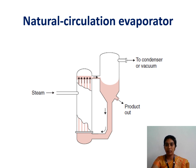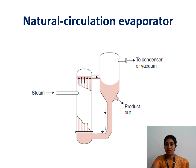Next is the natural circulation evaporator. Here, food material is passed inside these tubes and over the tubes, steam will be passed. Heat transfer takes place between the food inside the tubes and the steam outside the tubes. The product is collected in the calandria section, and if needed, it can be circulated again to get more concentrated.